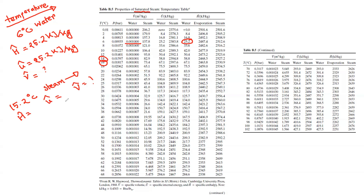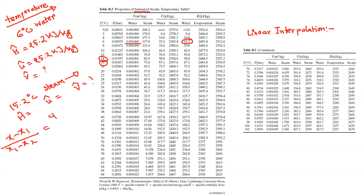We will show you the same as a linear interpolation for a specific volume of water. We have seen the linear interpolation, so we have to take a look at it. The formula is: x minus x1 divided by x1 minus x2 is equal to y minus y1 divided by y1 minus y2.